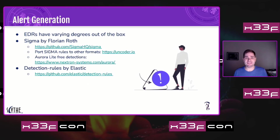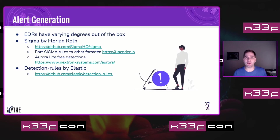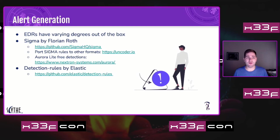For alert generation, there aren't as many free resources. EDRs have varying degrees of out-of-the-box coverage depending on the vendor. Sigma, by Florian, has become a massive project — you can port Sigma rules to other formats, and he's also built his own EDR with a community edition that tells you which Sigma rules you triggered. Elastic has also released their detection rules publicly. Security Onion and the SANS ELK stack are popular options. Shout out to Outflank for Red ELK, which brings a red team view to offensive monitoring.